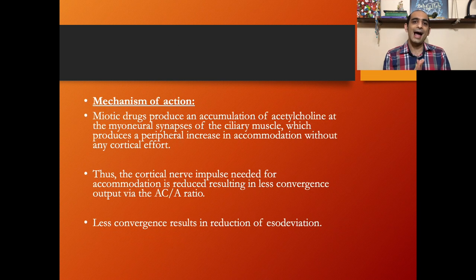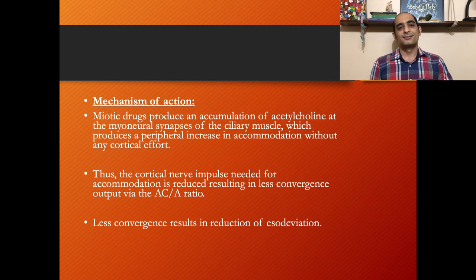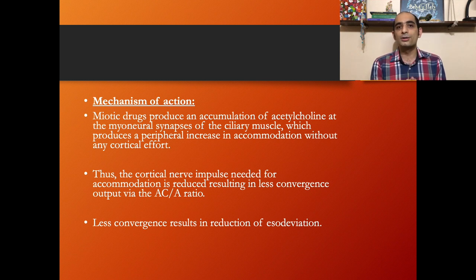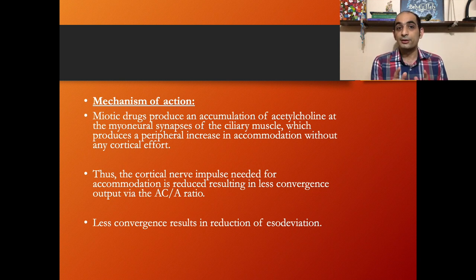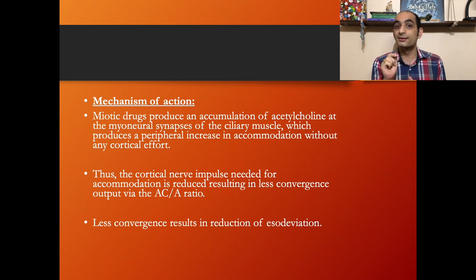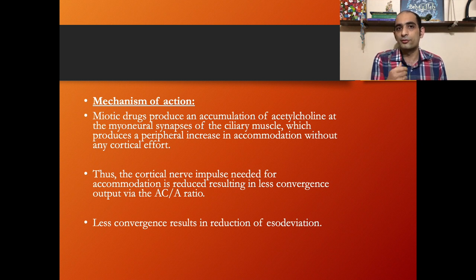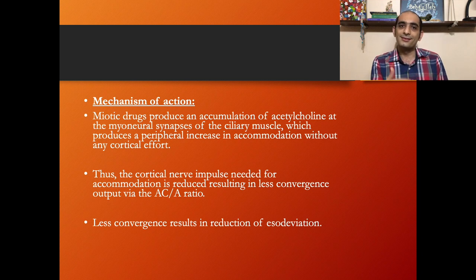Miotic drugs produce an accumulation of acetylcholine at the myoneural synapses of the ciliary muscle, which produces a peripheral increase in accommodation without any cortical effort. Thus we reduce the cortical nerve impulse needed for accommodation, which results in less convergence output via the AC/A ratio. Basically, we relax the convergence and it results in a reduction of esodeviation.